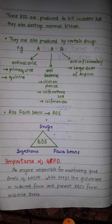Anti-malarial drugs include primaquine and quinine. Then we have antibacterial drugs such as chloramphenicol and sulfamethoxazole. Then we have anti-inflammatory drugs such as aspirin. Additionally, fava beans are also responsible for the production of reactive oxygen species.